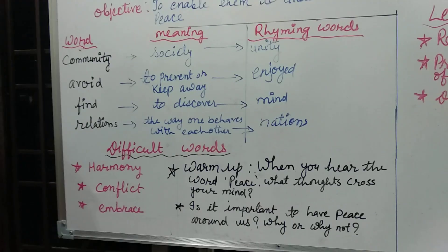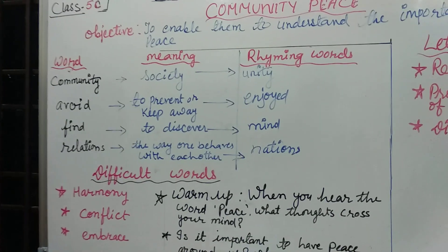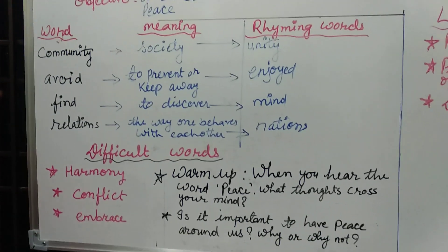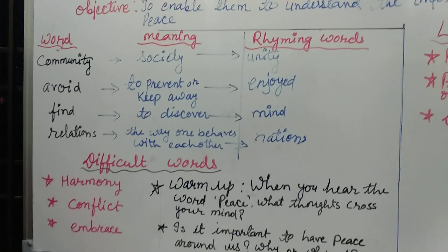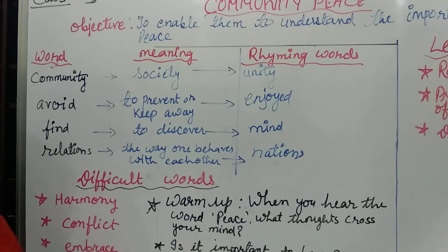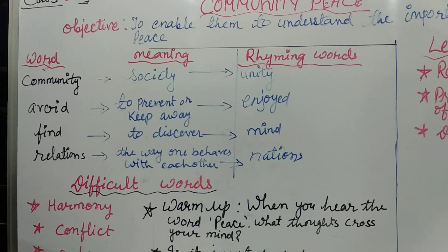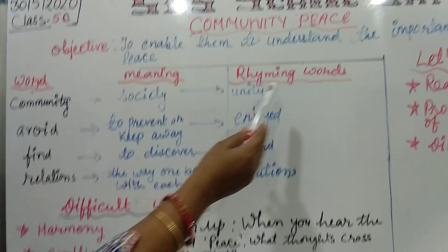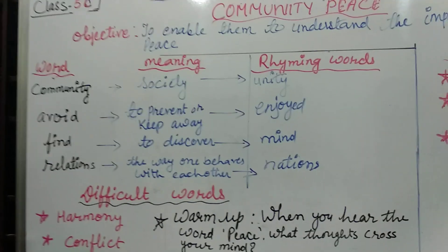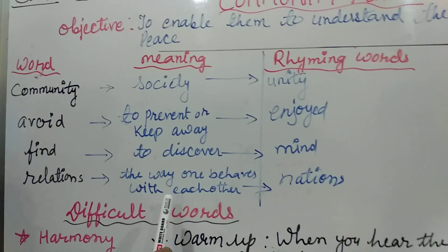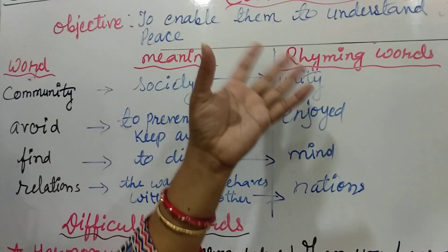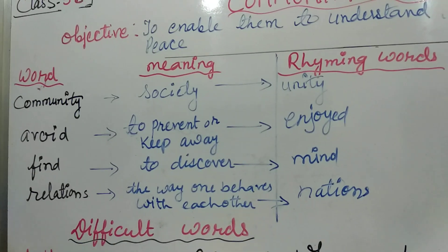Today as we read this particular book, you can take out page number 14. In page number 14 there is content which is written: listen and say aloud. Here they have given you the word and then the rhyming words. What I did here is I have given you some of the meanings of the words so that it becomes easier for you to understand what the poem is all about.